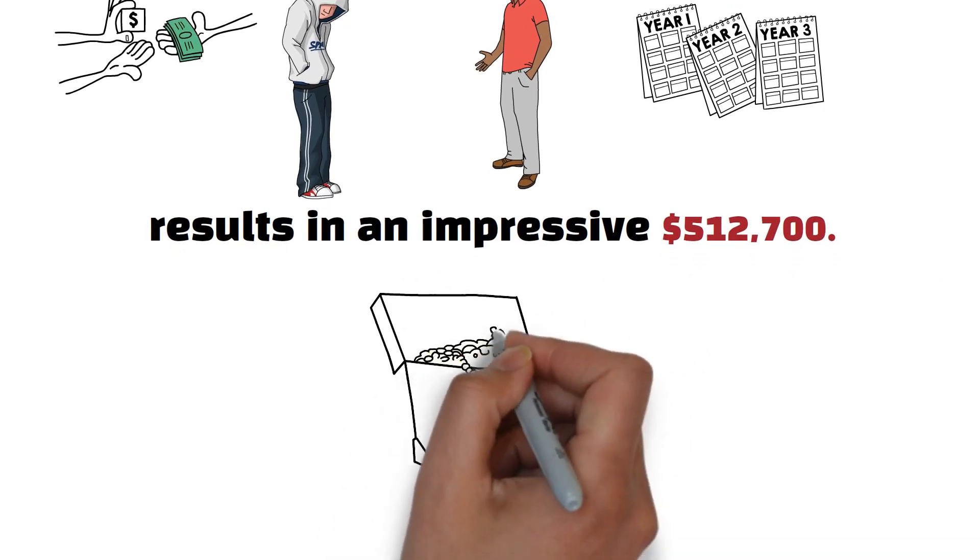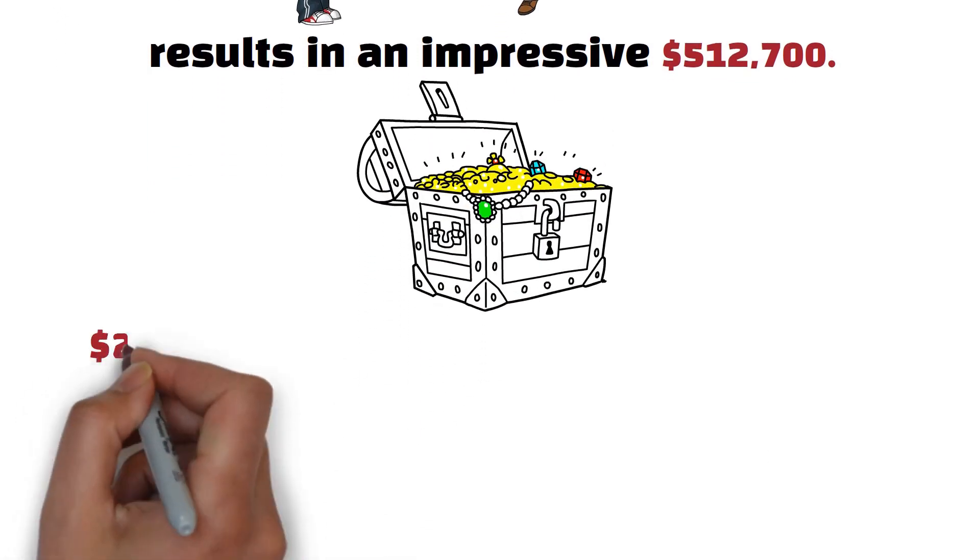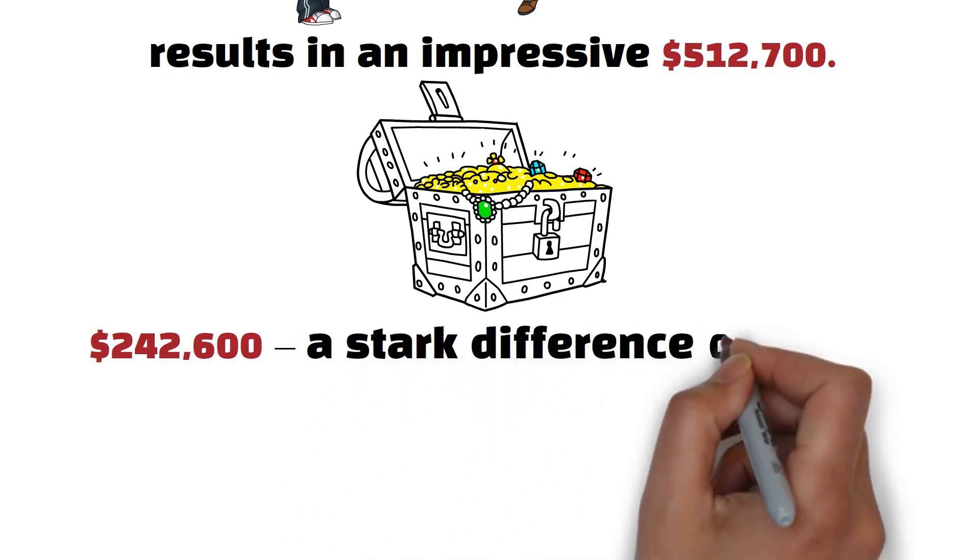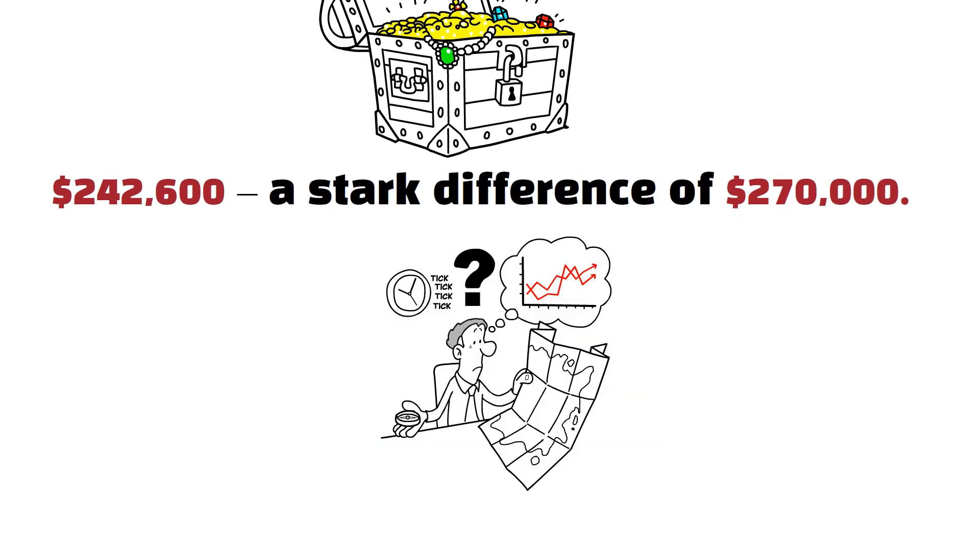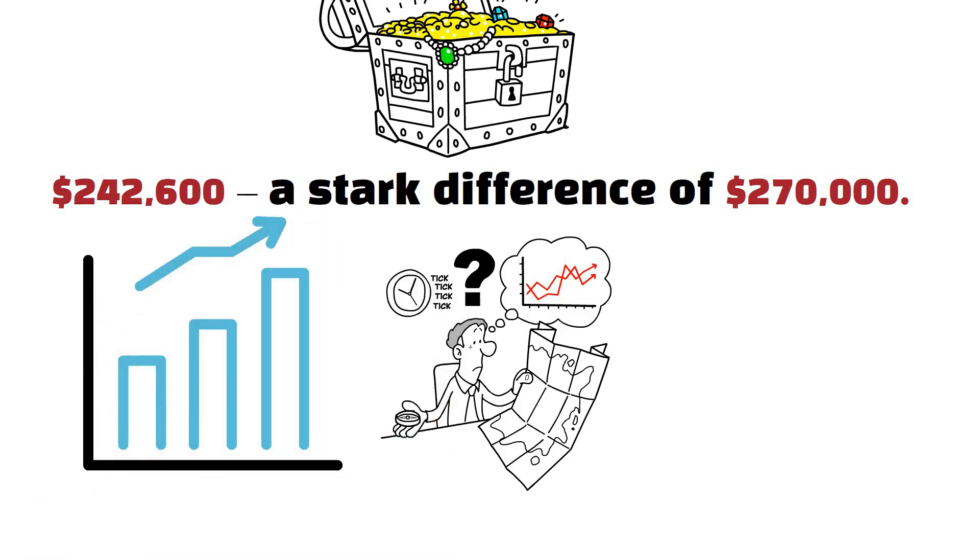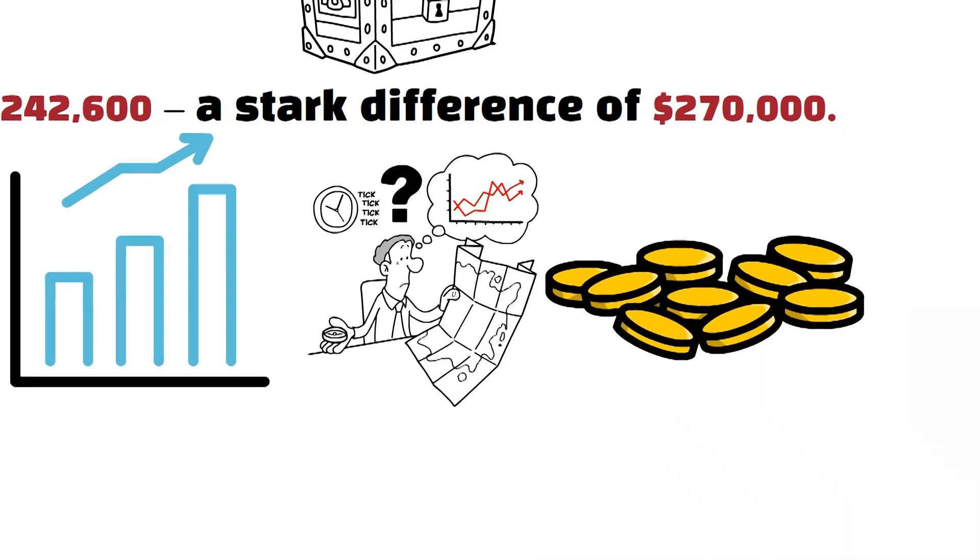However, procrastinate for a mere decade, and that potential wealth shrinks to $242,600, a stark difference of $270,000. The moral of the story? Prioritize assets that yield higher returns, like the dynamic stock market, and internalize the notion that time is not just money. It's a golden opportunity to secure your financial future.